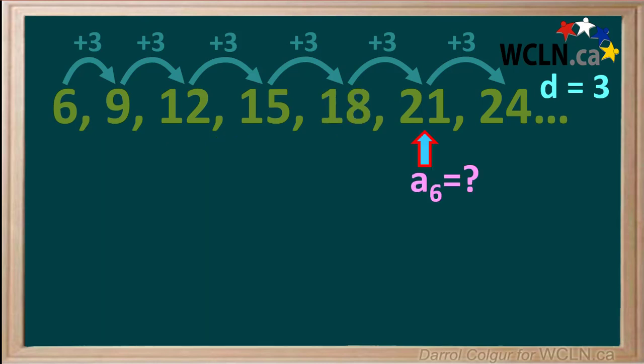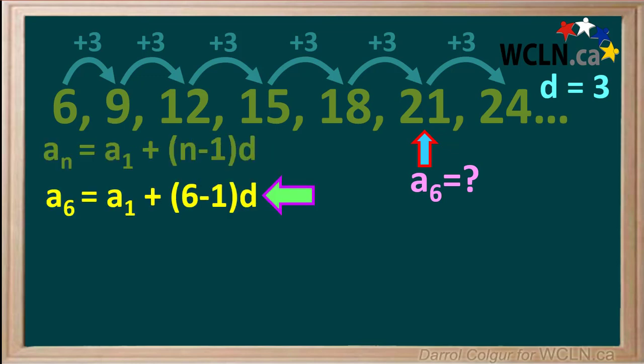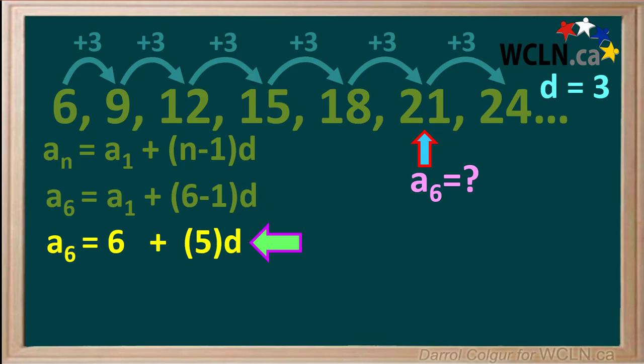We'll quickly use the equation again to find the value for term a6. Here's the equation. Since it's term 6, we can say that a6 equals a1 plus (6 minus 1)d, which equals 6 plus 5d.